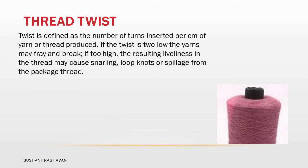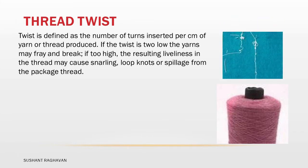Thread twist is defined as the number of turns inserted per centimeter of yarn or thread produced. If the twist is too low, the yarns may fray and break. If too high, the resulting liveliness in the thread may cause snarling, loop knots, or slippage from the package.